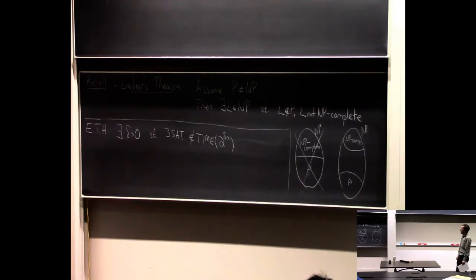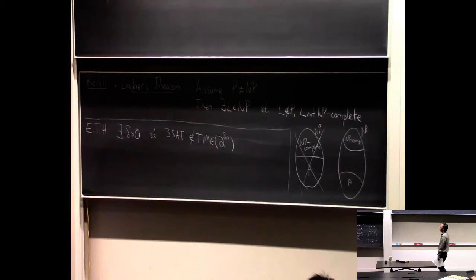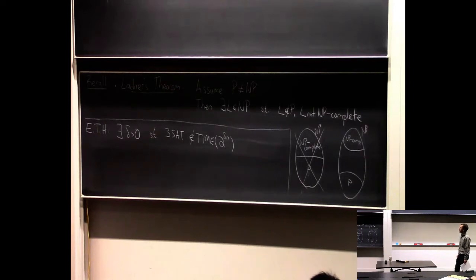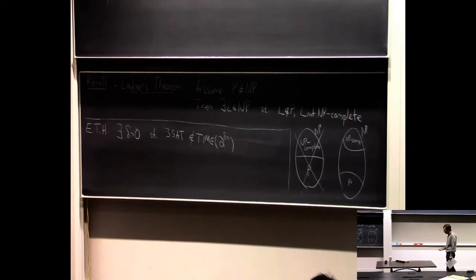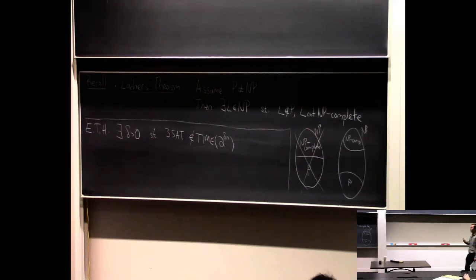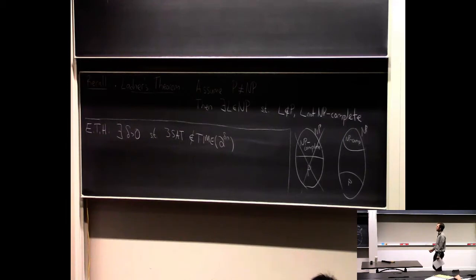We won't quite see the full proof of Ladner's theorem today. We'll see a proof of a slightly weaker form that captures all of the ideas, but the full proof is a bit tricky. We're also going to see Mahaney's theorem, which I think is not the most important theorem in complexity theory, but it's a proper theorem about complexity theory that takes a somewhat substantial but not too tricky proof.